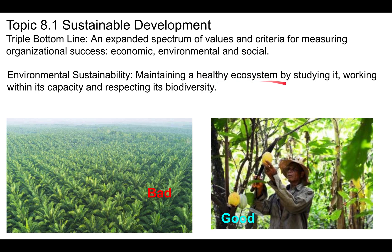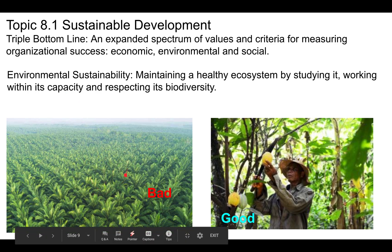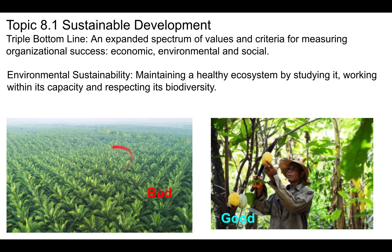When looking at environmental sustainability, what we're doing is maintaining a healthy ecosystem by studying it, working within its capacities, and respecting biodiversity. Here's an example of bad practice: palm oil plantations. What they do is take a rainforest, cut it down, and plant palm oil plantations. Palm oil is used in so many products — it makes a lot of money economically, but it's environmentally terrible.